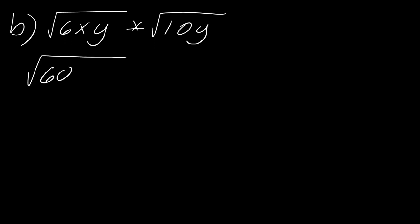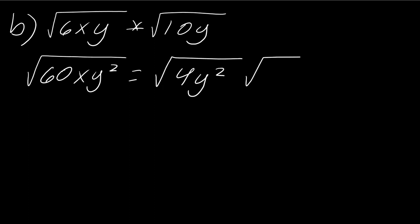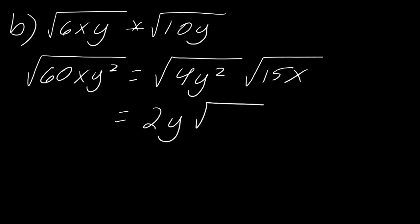So this is going to be 60xy squared when I multiply it together. The largest perfect square that divides into 60 is 4. So I can break out 4y squared — I can take that square root and then 15x will be left behind. So this becomes 2y times the square root of 15x. So like I said, this lesson is really just adding on to that.